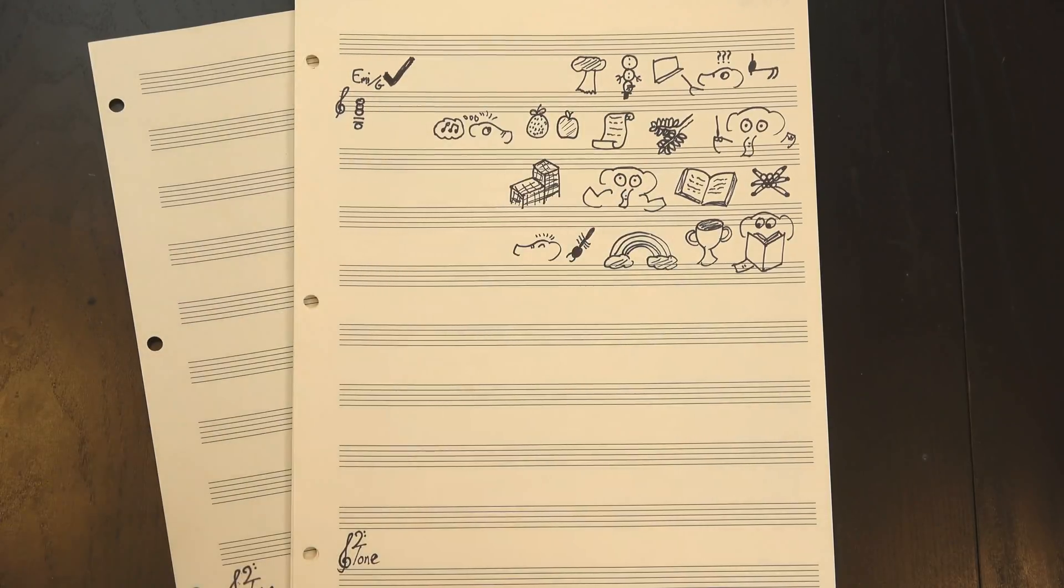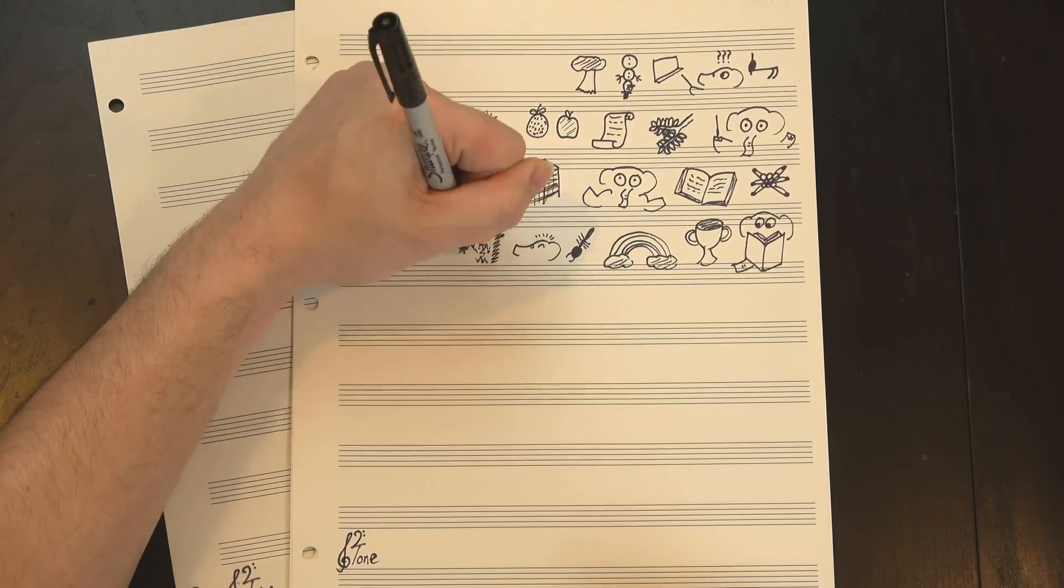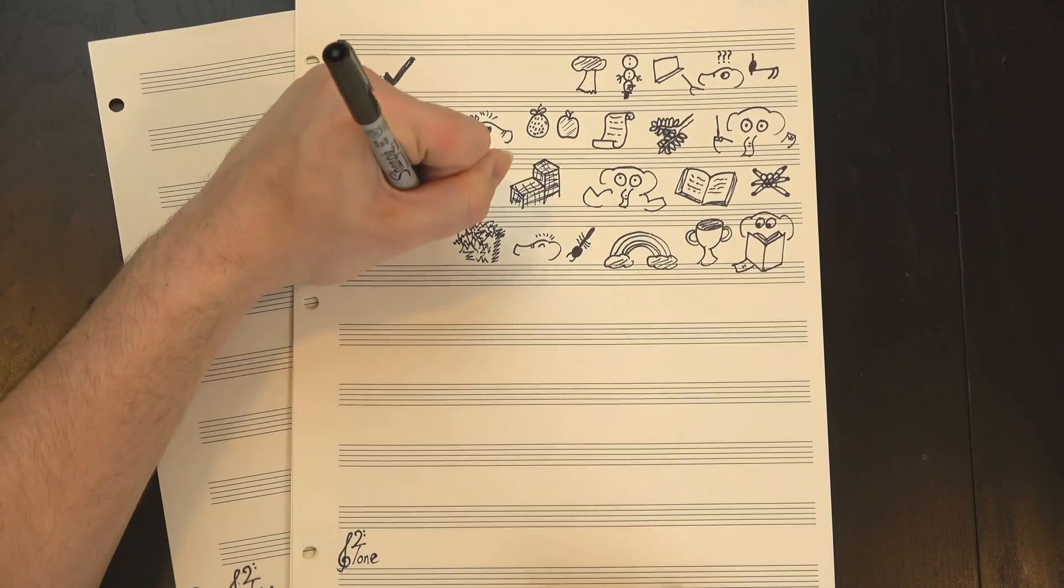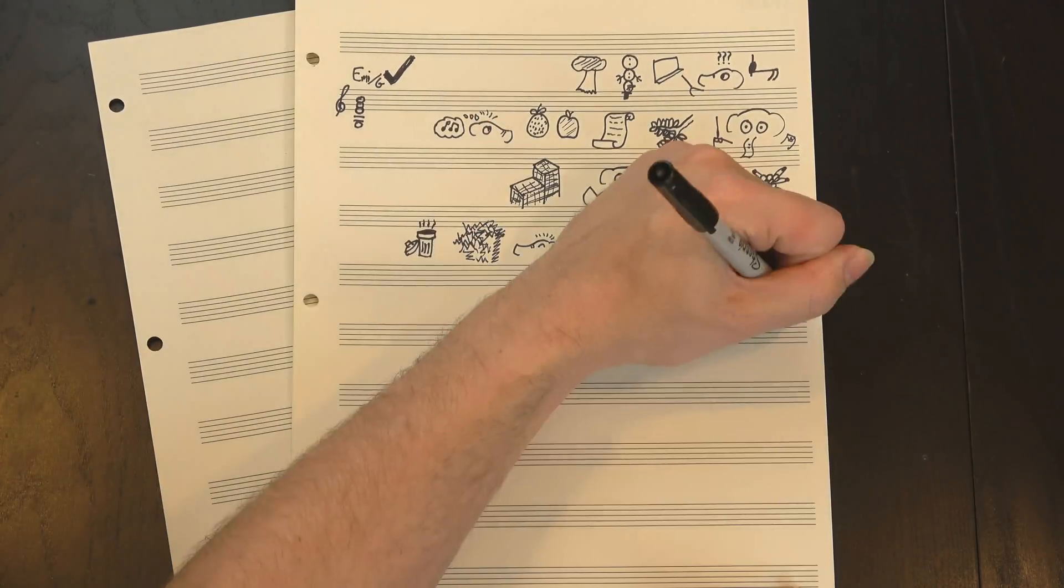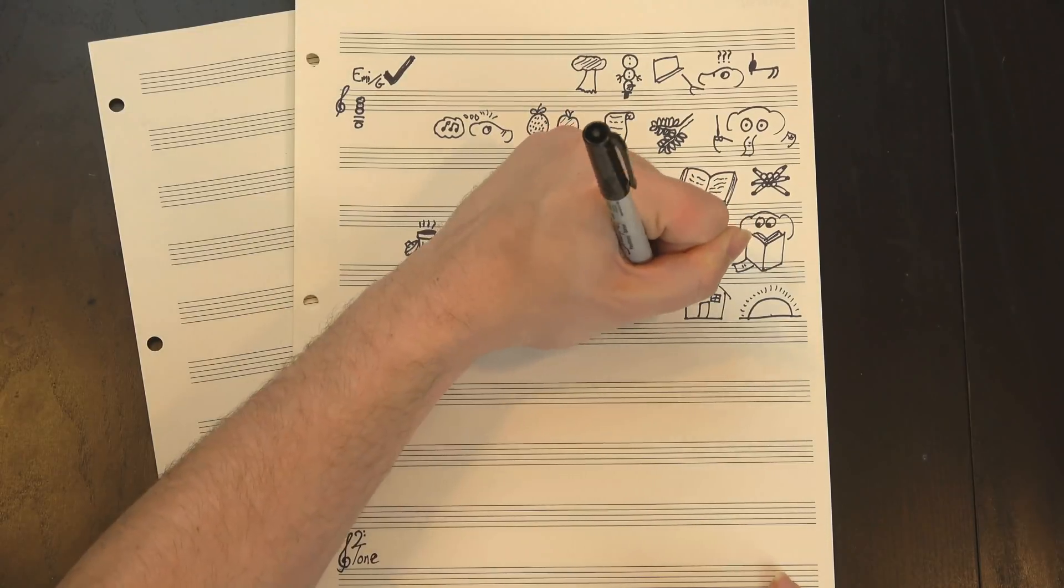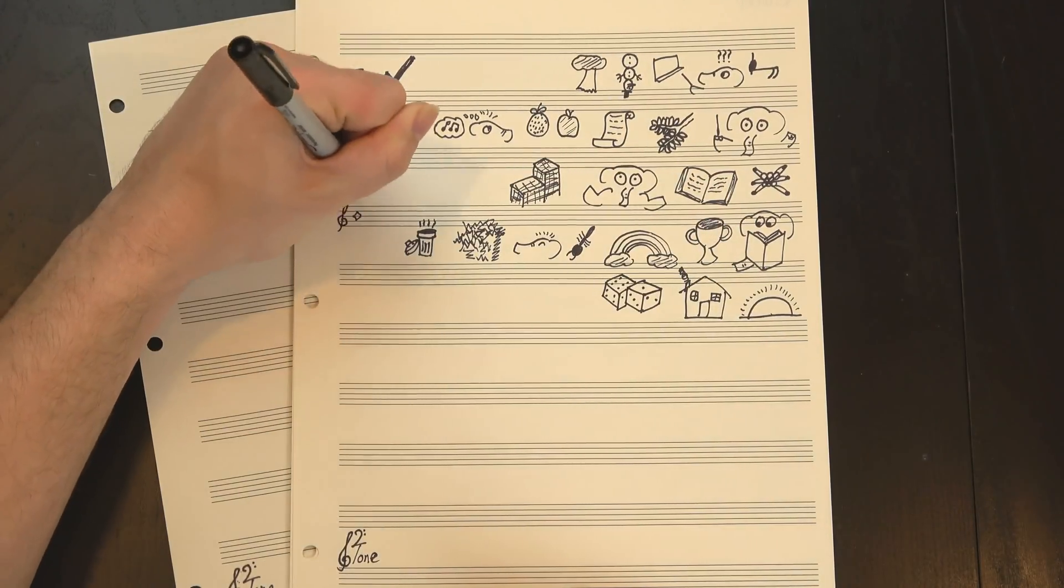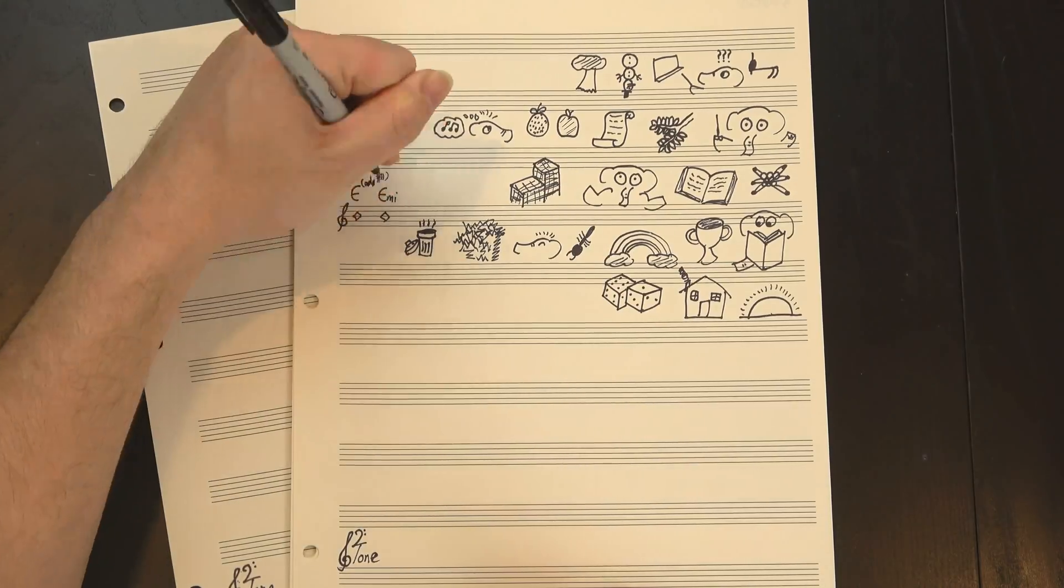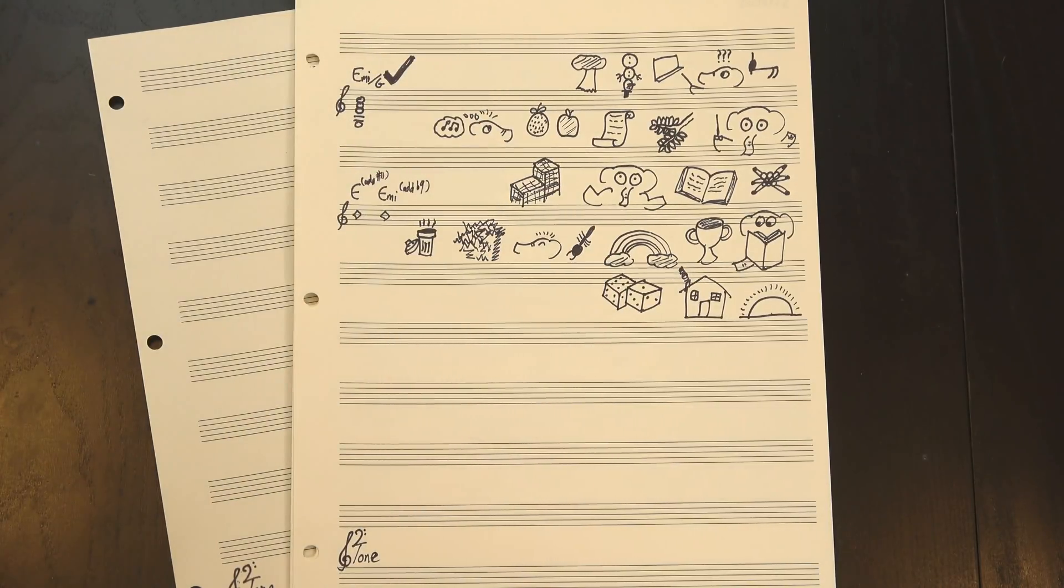One thing I find fascinating about the everything chords is that, even though by definition they contain some gnarly intervals, they actually don't sound that bad. I mean, I wouldn't call them consonant, but they have a clear sense of structure to them that not every random collection of notes has. Heck, the first pair are literally a major and a minor triad, just with added notes. You can even find them both in the major scale.